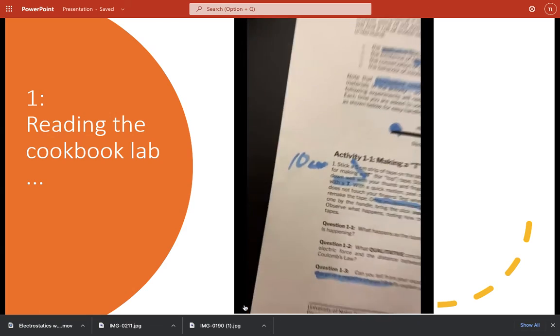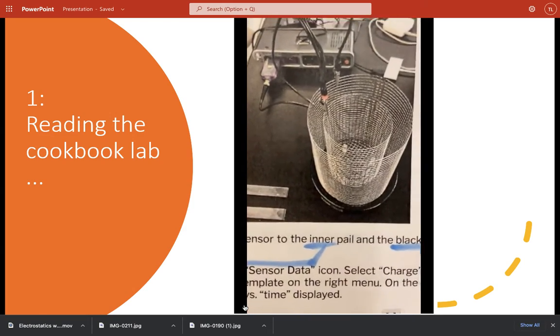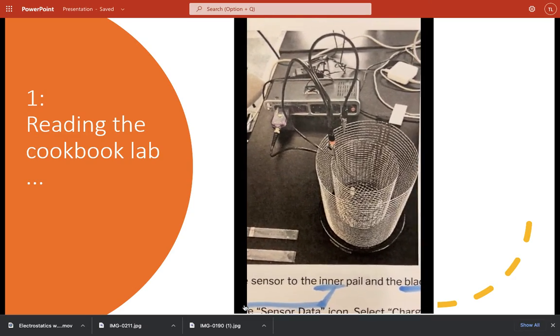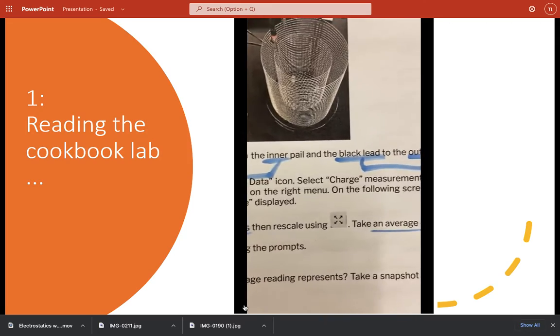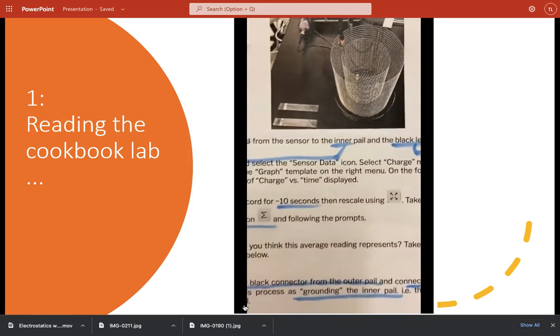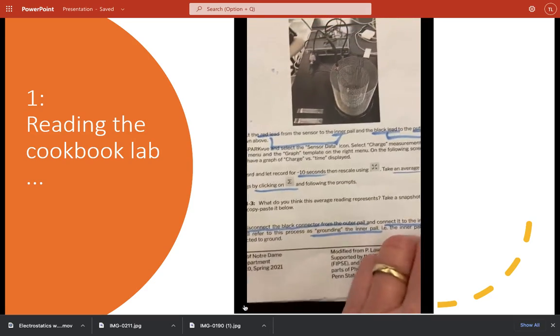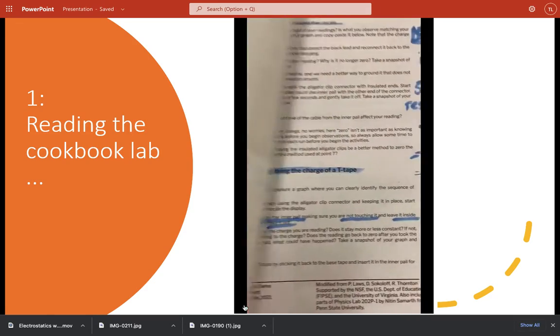And then I'm going to write down, as I go, a few key tips. Paying particularly attention to what's the physical setup look like? Are there key instructions that I could easily screw up? What leads go to what bucket, etc.? I might be able to figure out why eventually, but for now, just write down what they say.